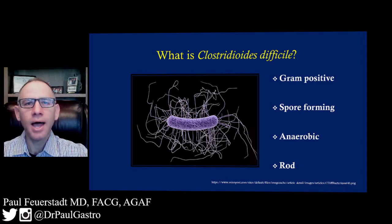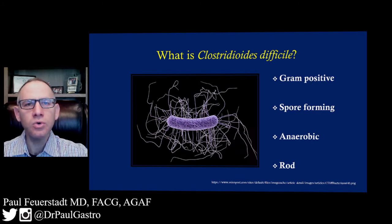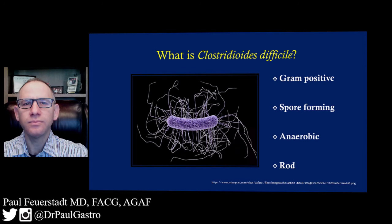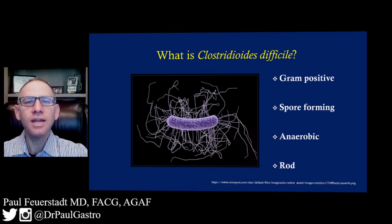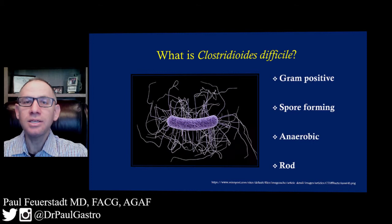Spore-forming implies that there is a phase of C. difficile that releases a spore or a cocoon that can last in the open environment for a longer amount of time. Anaerobic implies that C. difficile survives in an anaerobic environment — one that has no oxygen. Rod is the term for the shape of C. difficile; it is a rod shape.